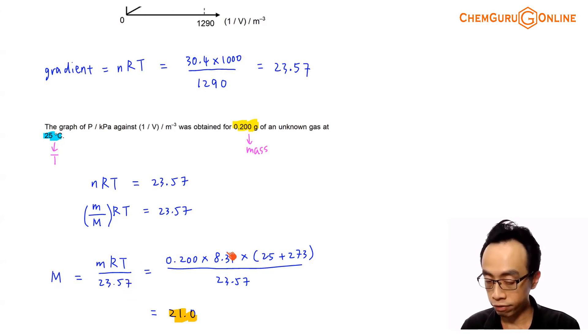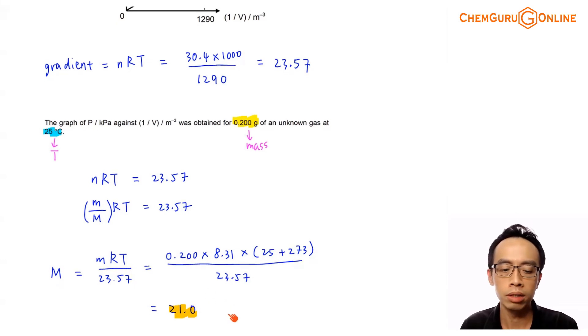It will be something like this. The relative molecular mass or the molar mass would be mass in gram multiplied by gas constant multiplied by temperature in terms of Kelvin divided by 23.57. So we have all these terms. We can substitute in all this value 0.200 gram of this gas. Gas constant is 8.31. Temperature, remember we have to convert it to Kelvin, 25 degrees C plus 273, convert it to Kelvin, divided by the gradient 23.57. We work this out, we will get this value 21.0.